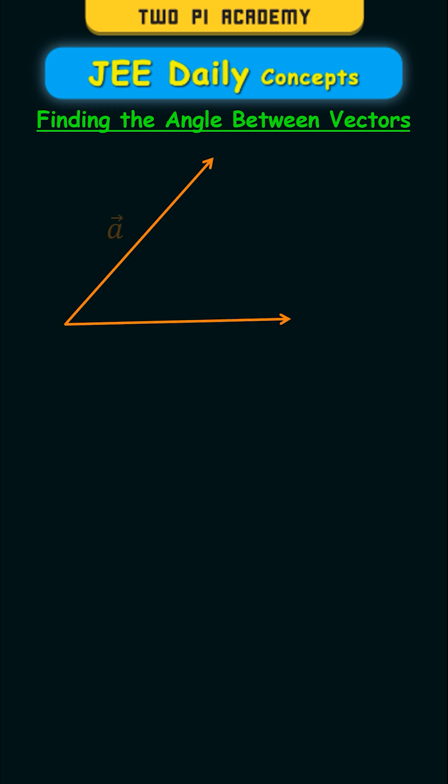Suppose you know two vectors, vector a and vector b, and let's say the angle between them is noted by theta. Then in that case, the dot product of the two vectors refers to the product of their magnitude and the cosine of the angle between them.